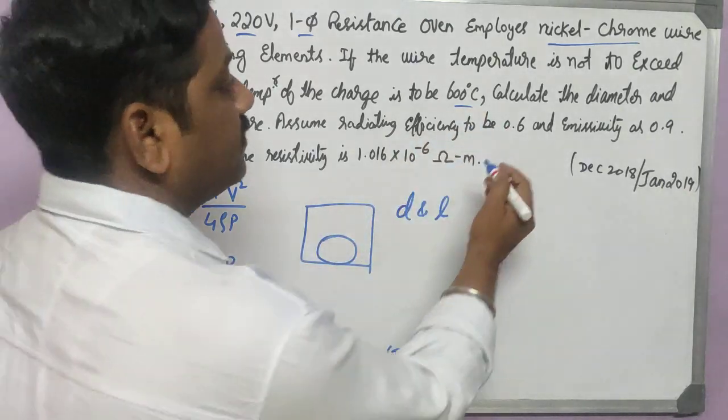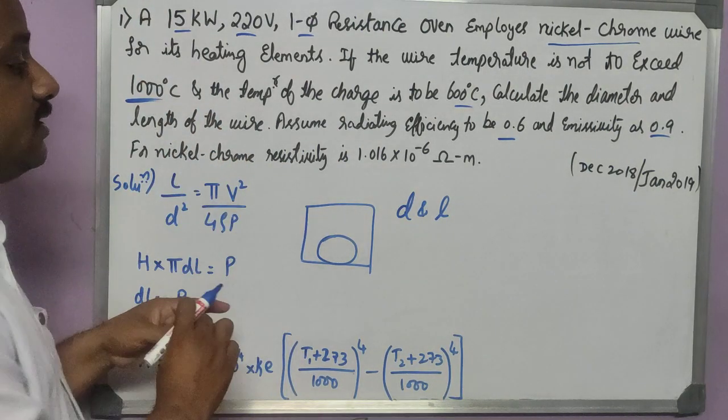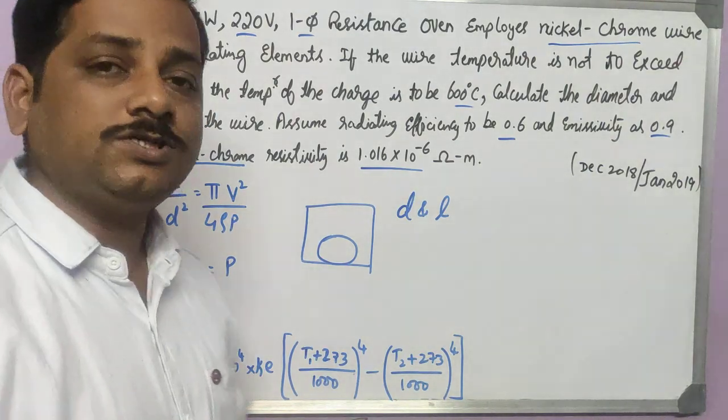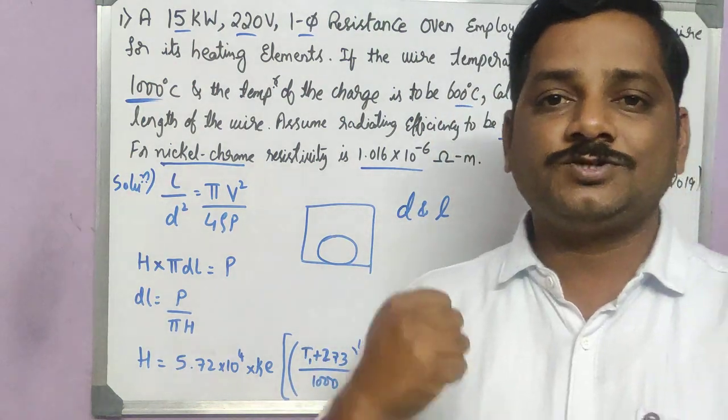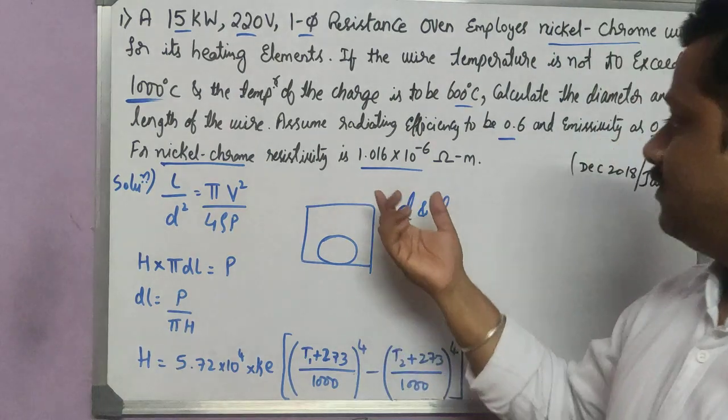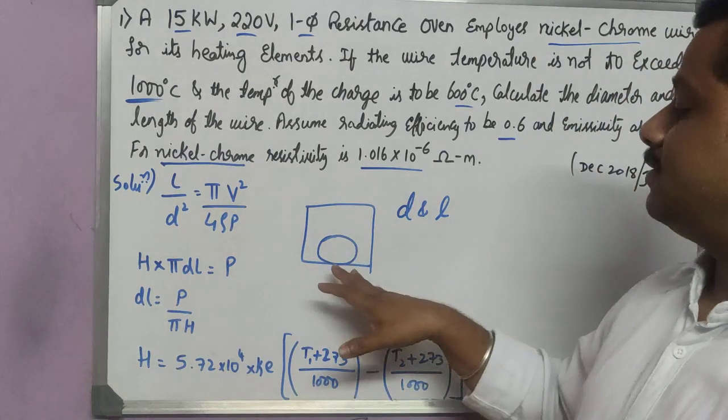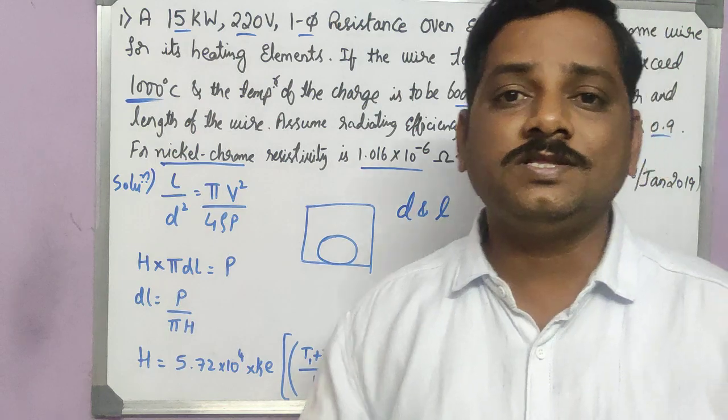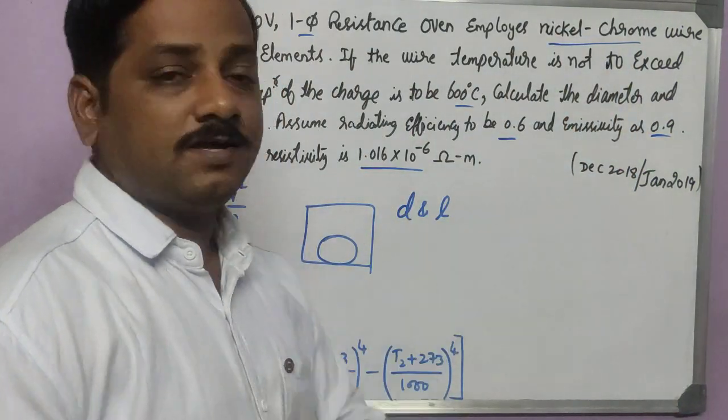The resistivity is given based on the type of element, which is nichrome. Now the question is very simple. They are asking you to design the nichrome wire that should be capable of generating 1000 degree Celsius temperature in the oven. Because of losses and radiating efficiency being reduced, maximum I should get 600 degrees for the charge. So what should be the size of the wire? You need to identify the D and L dimensions of it.